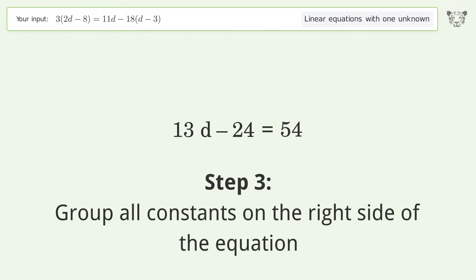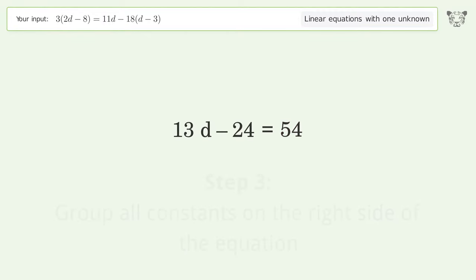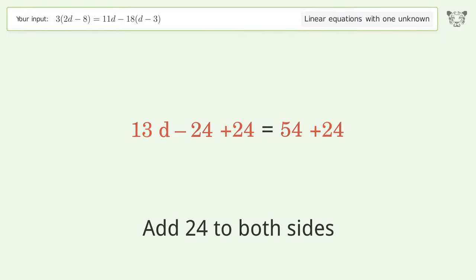Group all constants on the right side of the equation. Add 24 to both sides. Simplify the arithmetic.